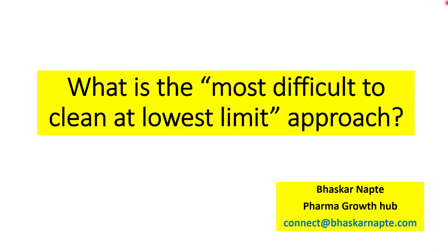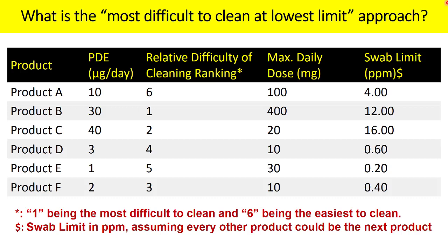Let us begin. In column one, you will find six products. In the second column, you will find the permitted daily exposure (PDE) in micrograms per day. PDE means the amount of a product that can be consumed in the next product — for example, product A has a PDE of 10 micrograms per day — and this is calculated based on toxicity studies.